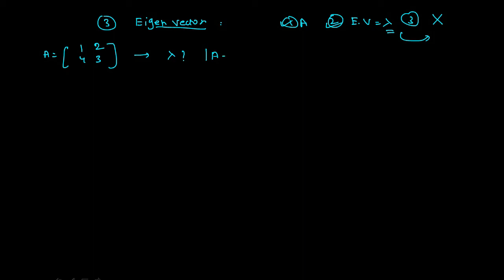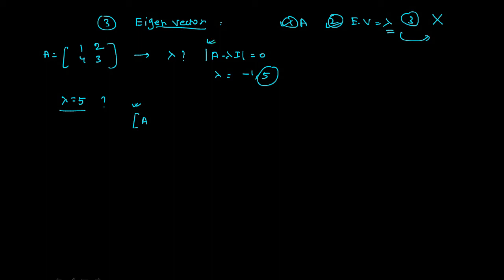We found lambda using determinant of A minus lambda I equals 0, giving lambda = −1 and 5. Now for lambda = 5, what is the respective eigenvector? The step is: matrix (A − λI) multiplied by X equals 0. So we have [1−λ, 2; 4, 3−λ] multiplied by X equals 0. When I talk about the eigenvector I use the matrix bracket (not the straight-line determinant notation).